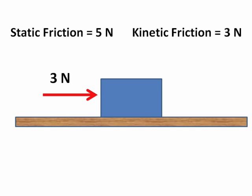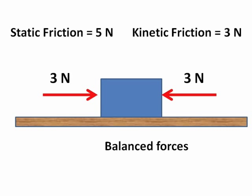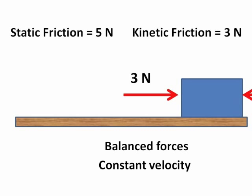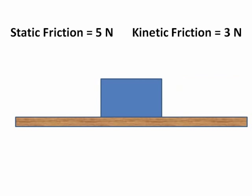Now, if I then push with 3 newtons because it's already moving, I can pull it at a constant velocity because I have balanced forces and the kinetic friction is 3 newtons. Look at the diagram very carefully.